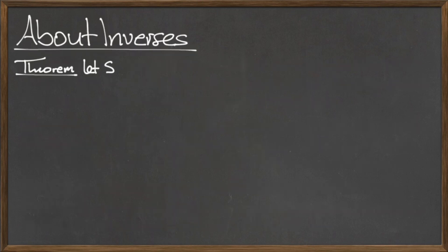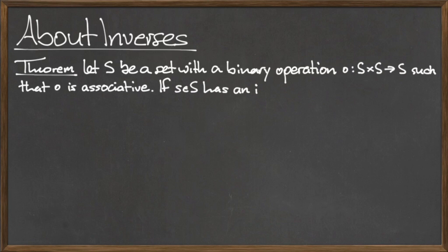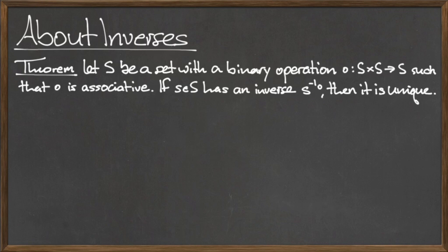There are several important theorems related to inverses, which we will discuss here without proof. The first theorem is related to the uniqueness of the inverse. Let S be a set with a binary operation dot from S cross S to S, such that dot is associative. If little s in the set capital S has an inverse, then that inverse is unique. This theorem does not state that every element little s in the set capital S has an inverse, only that if such an inverse element does exist, then it is unique.